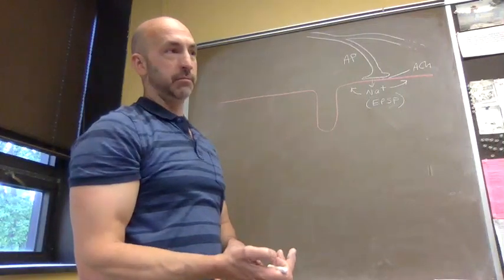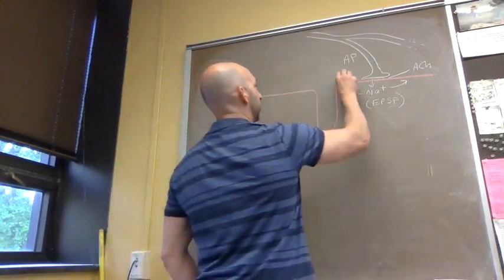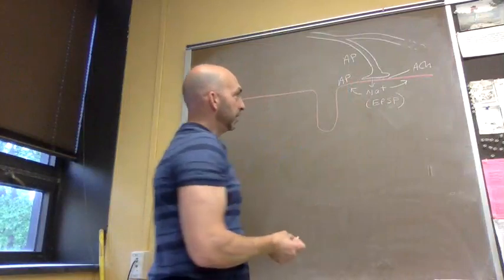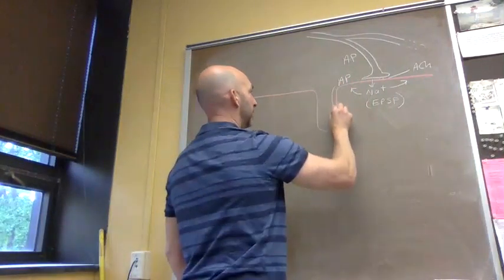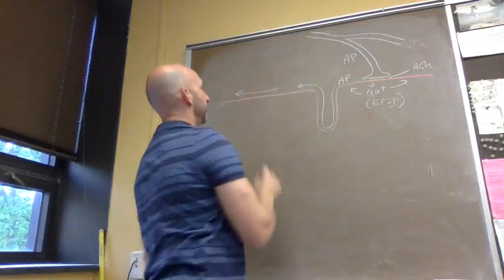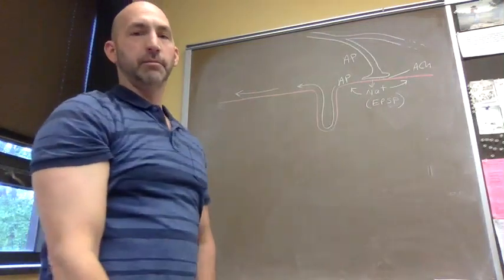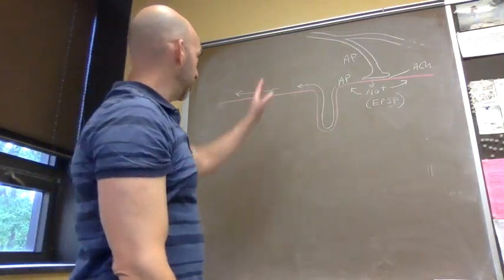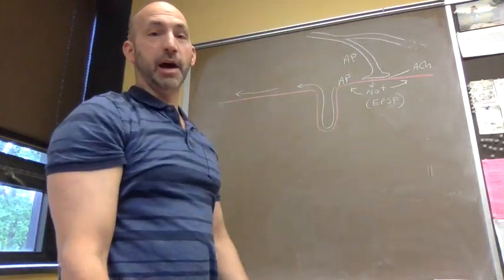The sarcolemma, the membrane of the muscle cell, has voltage-gated channels—sodium and potassium—so we're going to get an action potential. We have an action potential in the sarcolemma membrane, and it travels along the surface of the muscle cell, depolarizing at every spot along that cell.